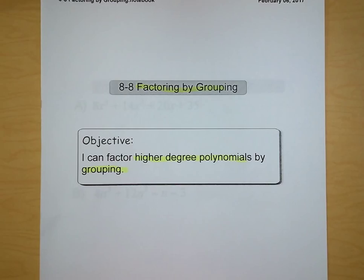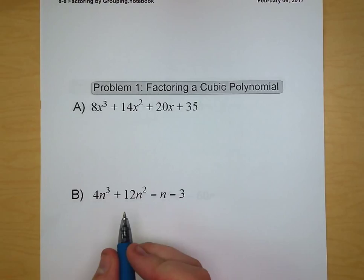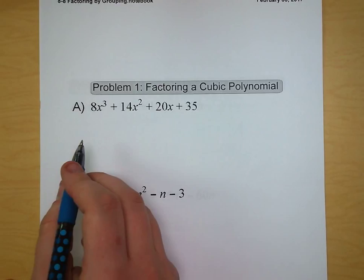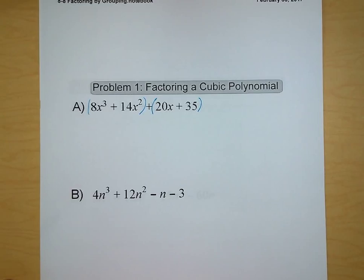Problem one for today is going to be factoring a cubic polynomial. We have 8x cubed plus 14x squared plus 20x plus 35. The first thing we're going to do is use the associative property and put in some parentheses. We're going to put parentheses before 8x cubed and after 14x squared, and we're going to put them around the 20x and the 35. So we've broken this down into two pieces.